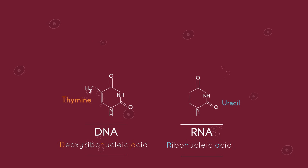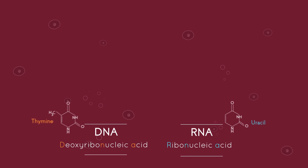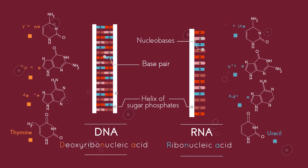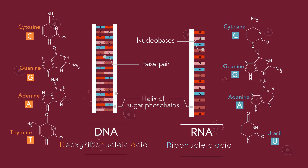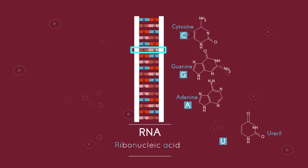Look here — RNA has a base called uracil, or U, whereas DNA has the base thymine, or T. So in RNA, C and G still pair, but now A and U pair.